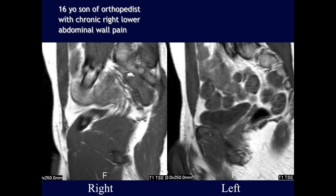A 16-year-old tennis player — son of an orthopedist — with chronic right lower abdominal pain. The distal rectus abdominis tendon appears attenuated and markedly thickened on the right compared to the normal left side, similar to how medial collateral ligament injuries show thickening. This is evidence of chronic injury from tennis. The rectus abdominis muscle also shows some atrophy on the injured side.